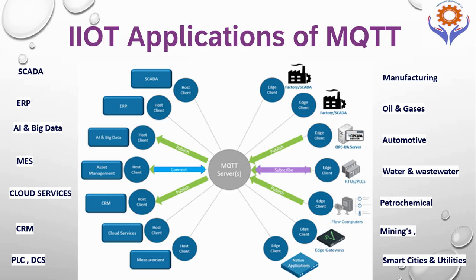The major IIoT applications using MQTT interconnect OT and IT networks, such as SCADA, ERP, AI and big data, MES, cloud services, CRM, and PLC and DCS data. The important sectors include manufacturing, oil and gas, automotive, water, wastewater, petrochemical, mining, smart cities, utilities, and more. Everywhere in the world, MQTT protocol is now being used.